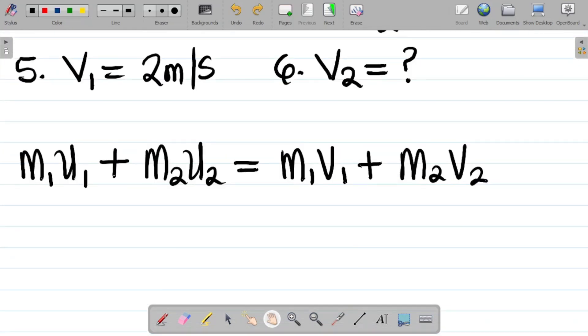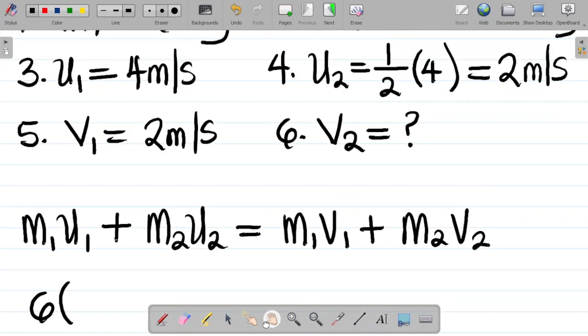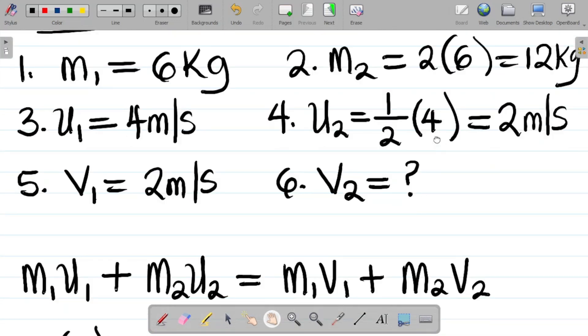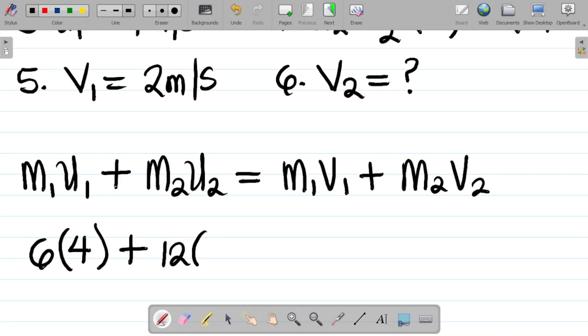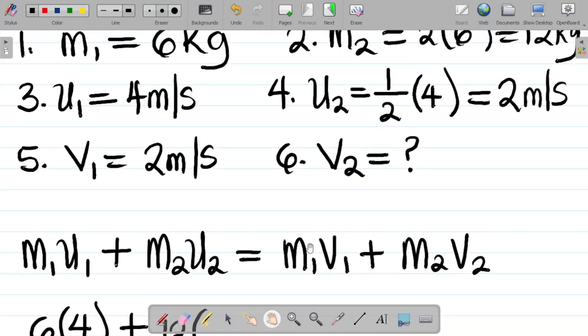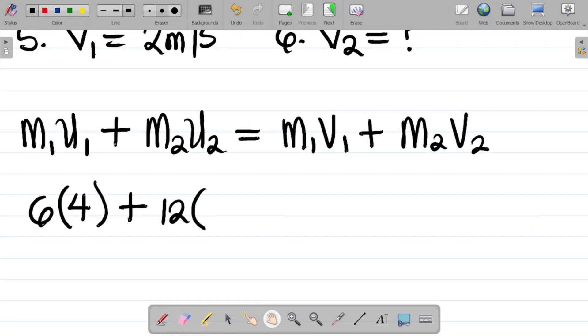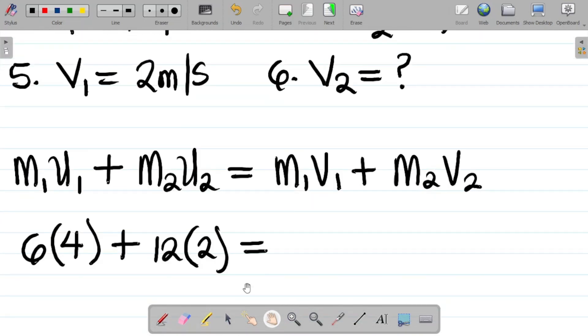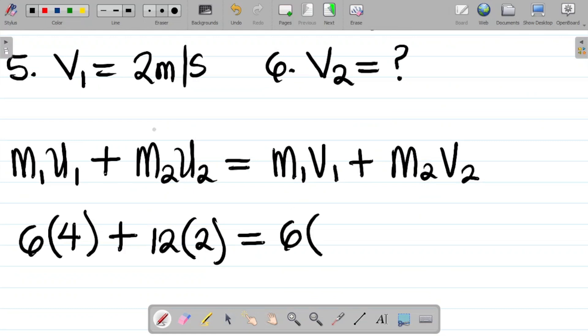m1 is 6 kg. So 6 into u1, u1 is 4, so I have 4 meter per second. Plus m2, m2 is 12 kg, that's twice the mass, 12 into u2, u2 is 2 meter per second, that's half the speed. Equals m1, m1 is 6 kg, that becomes 6 into v1. v1 is 2.